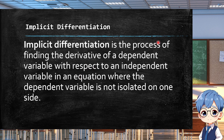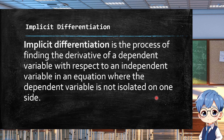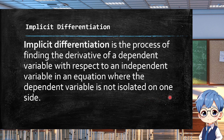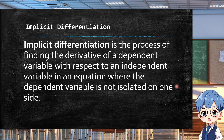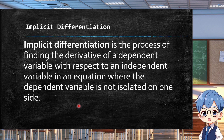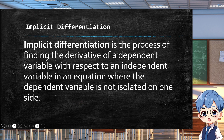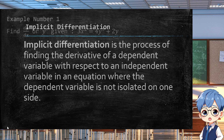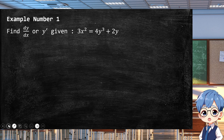The process of implicit differentiation is used to find the derivative of equations, not just functions. If you look at our standard process of getting derivatives, it's just functions — but how about equations like the equation of a circle, parabola, ellipse, hyperbola, and other equations that do not fall under the umbrella of functions? So we have implicit differentiation.